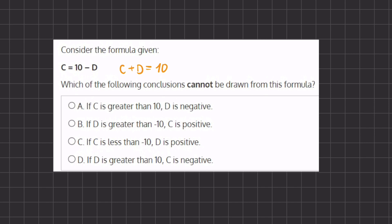Okay, now let's start off with option A. If c is greater than 10, d is negative. This statement is correct because if c is greater than 10,